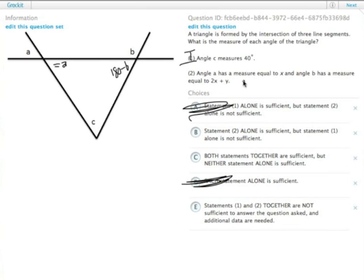Statement 2 tells us that angle A has a measure equal to X. Angle B has a measure of 2X plus Y.